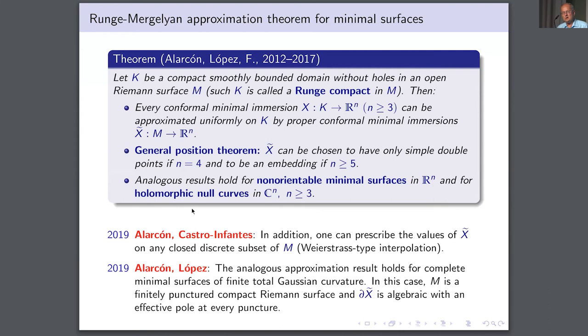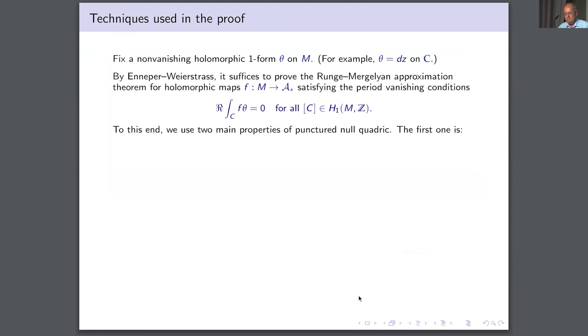Alarcón with his then PhD student Castro-Infantes proved a Weierstrass-type interpolation theorem. In a more interesting development, Alarcón and López showed a similar result for minimal surfaces which are complete — metrically complete, of finite total Gaussian curvature. The structure theory of such surfaces is well known: M must be a compact Riemann surface with finitely many points removed, and the differential δX must be an algebraic object with poles at these punctures.